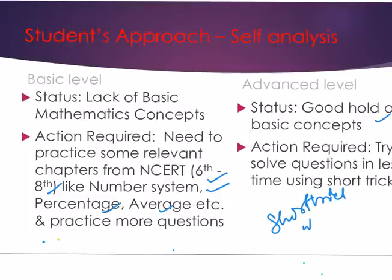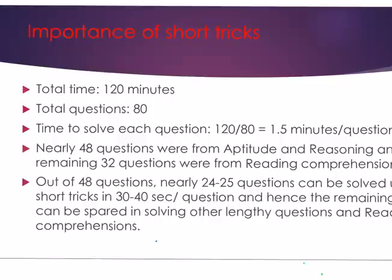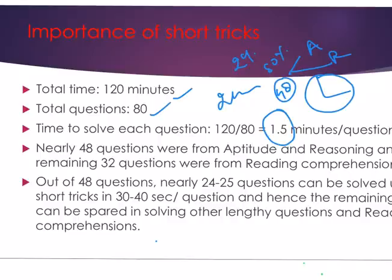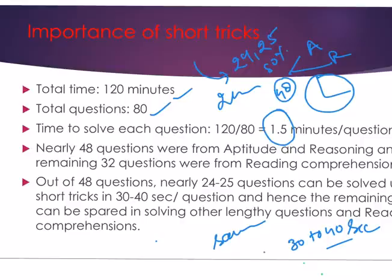Now we see why short tricks are used and their importance. The CSAT paper is 2 hours — 120 minutes total with 80 questions — giving you 1.5 minutes per question. In the 2019 paper, around 48 questions were asked from aptitude and reasoning alone. For about 24 to 25 of those questions we can use short tricks, solving them within 30 to 40 seconds. By using short tricks you can save time and use that saved time for lengthy questions, reading comprehension, and other sections.